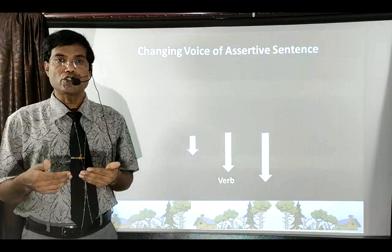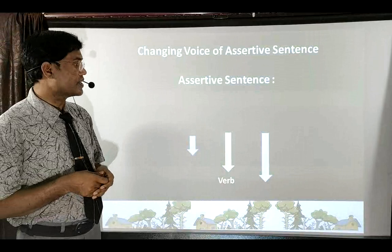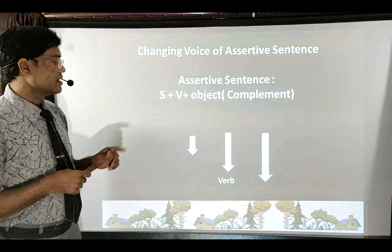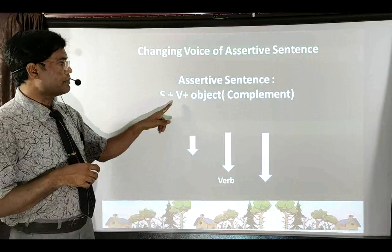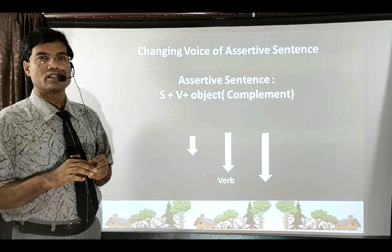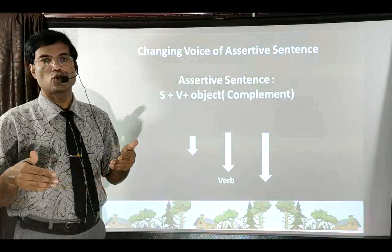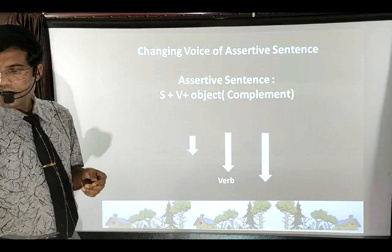Before knowing how to change the voice, we should know about assertive sentences. An assertive sentence follows the structure where subject comes first, then the verb — which can be in any tense — followed by the object or complement. The object or complement is any word that comes to complete the meaning of the verb.